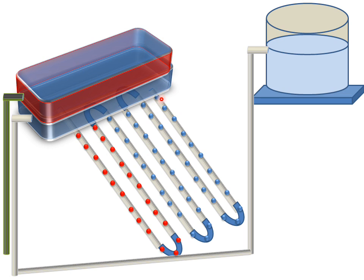Cooling water comes in from the container, and the heated water goes up inside the container. The warm water then comes out through the outlet pipe. This is the working of the solar water heater which we use in the house.